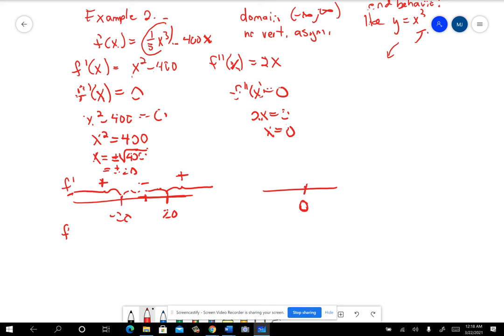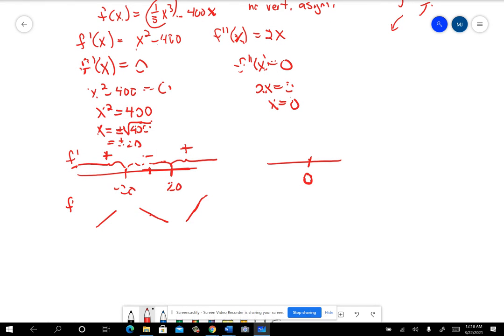Well, what that means is that f is going to be increasing, decreasing, increasing. Not necessarily constant like that, but it's going to be rising, falling, rising. And so that makes negative 20, this one makes that a max. And see, it makes that one a min.